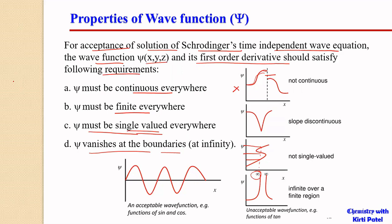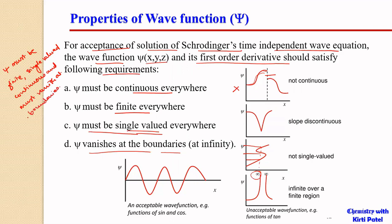In simple terms, the wave function must be finite — ψ must be finite, single-valued, continuous, and must vanish at boundaries. If it satisfies these conditions, then it is an acceptable wave function.